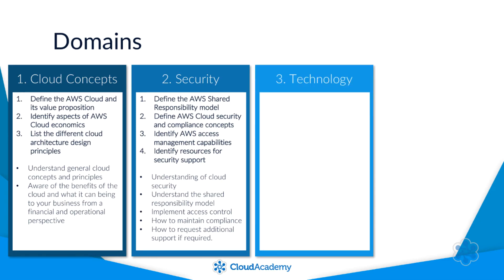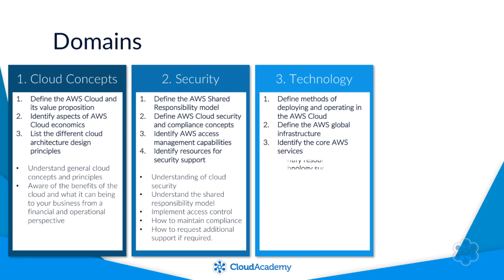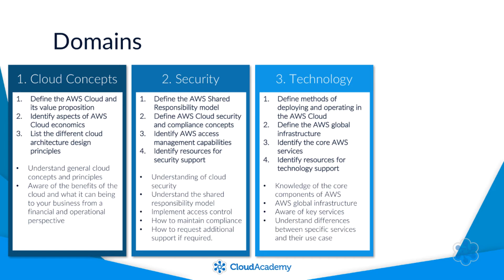Domain three: technology. Much like the previous domain, this also has four key areas of interest — define methods of deploying and operating in the AWS cloud, define the AWS global infrastructure, identify the core AWS services, and identify resources for technology support. This domain will test your knowledge of the core components of AWS, its global infrastructure and its key services across a spectrum of categories such as compute, storage, databases and networking. You must know the differences between specific services and what those services are used for.